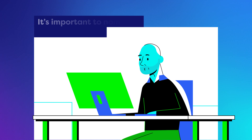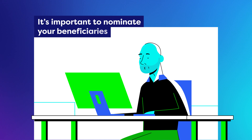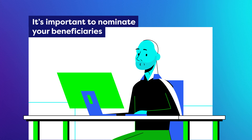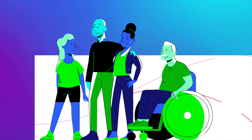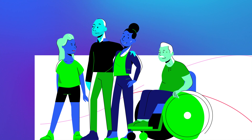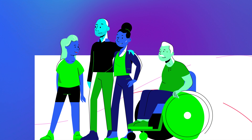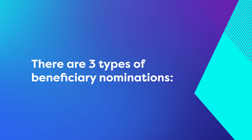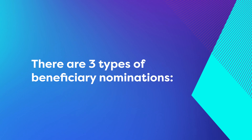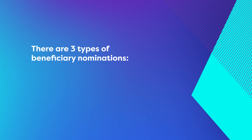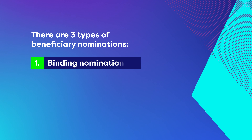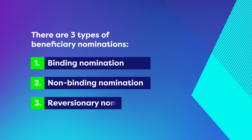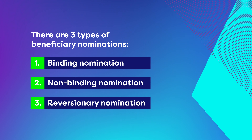Nominating your beneficiaries is an important part of managing your super. It lets you have your say about who we pay your super benefit to after you pass away. There are three types of beneficiary nominations: a binding nomination, non-binding nomination, and a reversionary nomination.